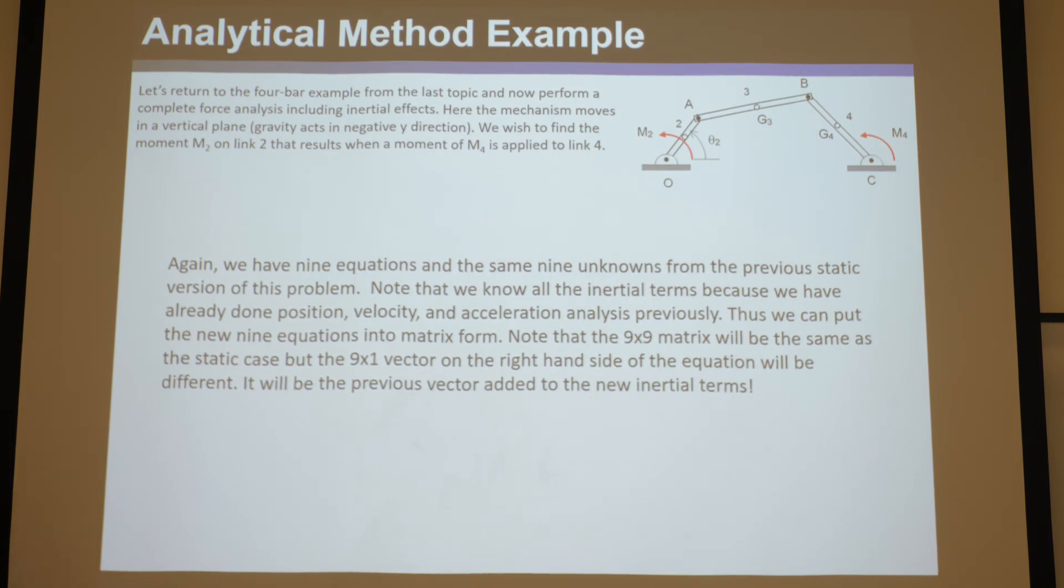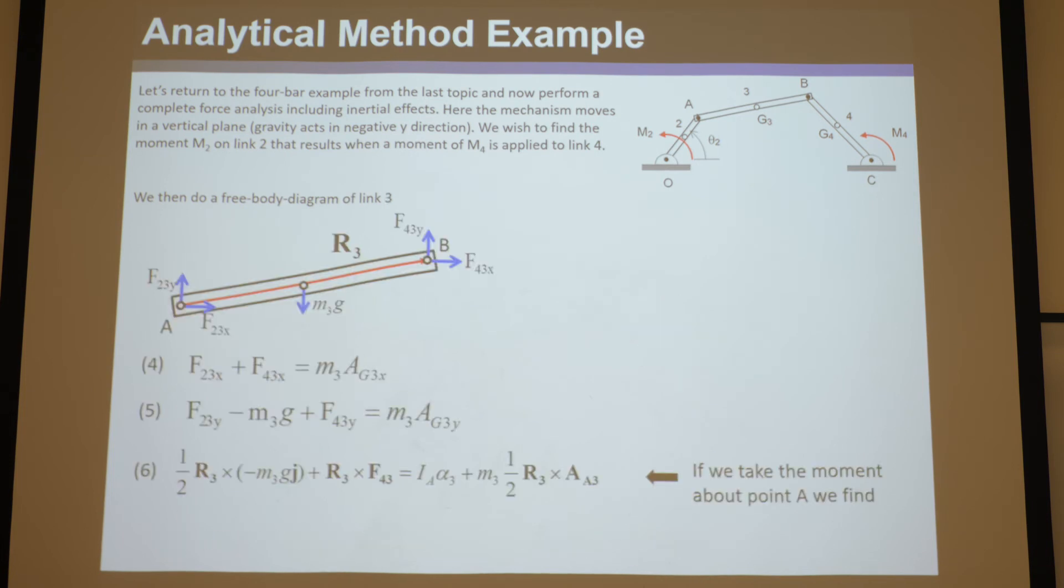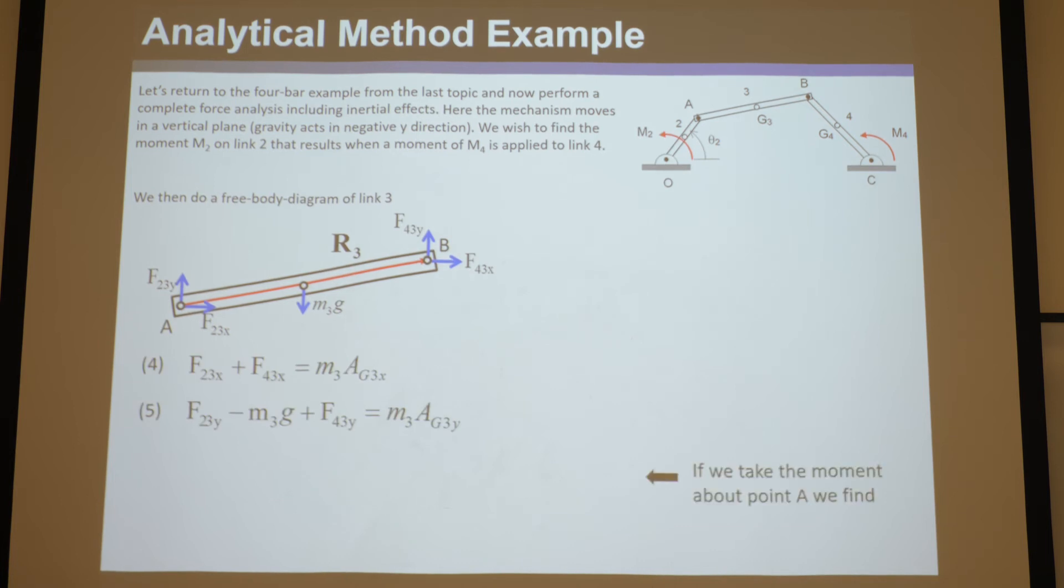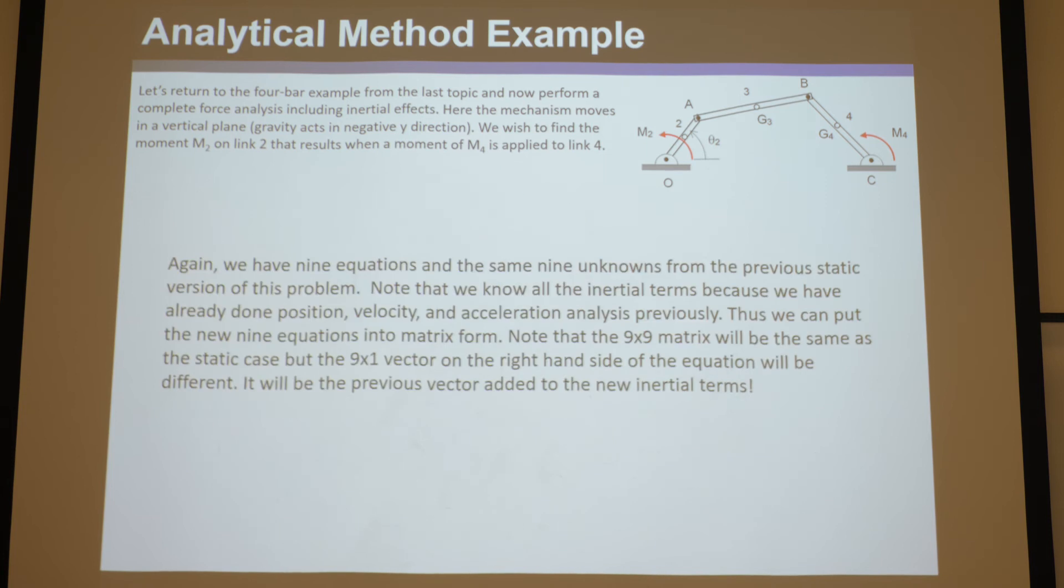And I actually want you to do this for this lecture. Use these new nine equations - equation one, equation two, equation three, four, five, and six, seven, eight, and nine - pull out the same nine unknowns, make them in matrix form, and invert them. Show how you could use that matrix form to solve for the things you wouldn't know.